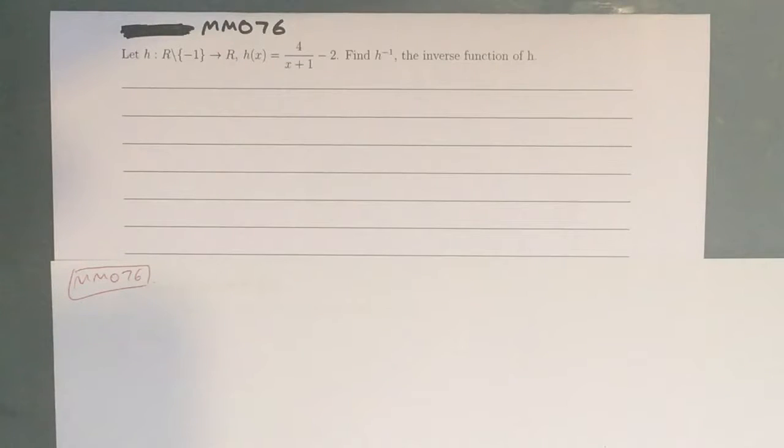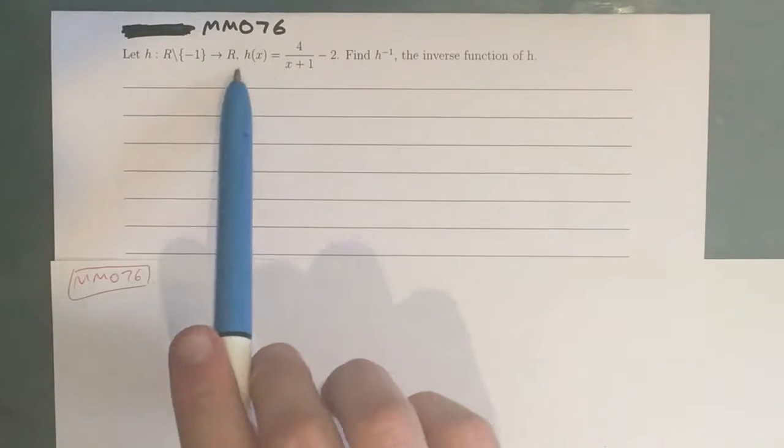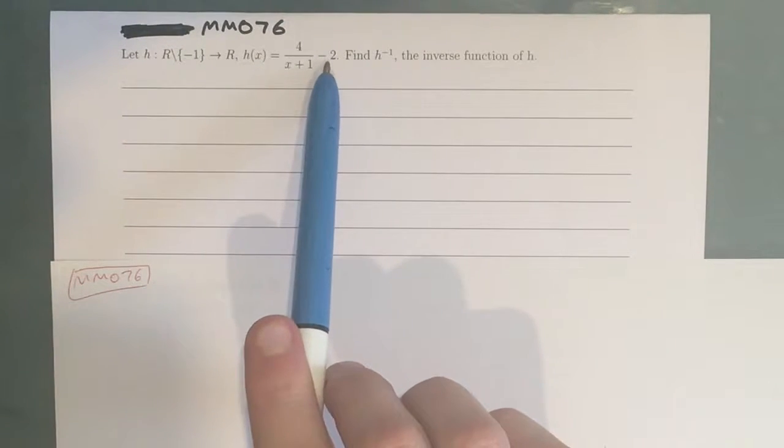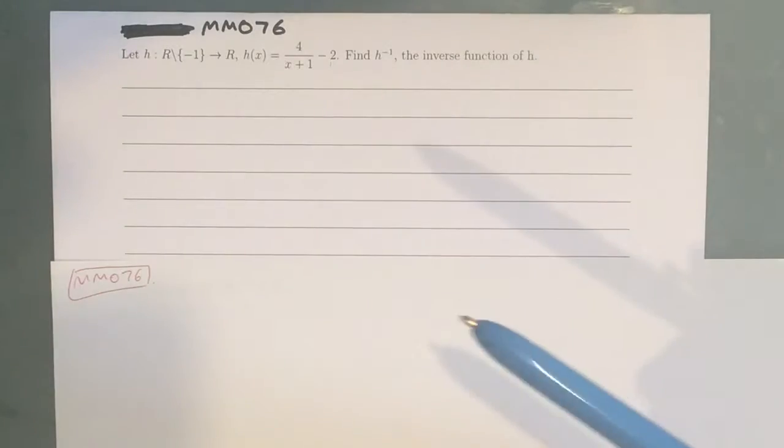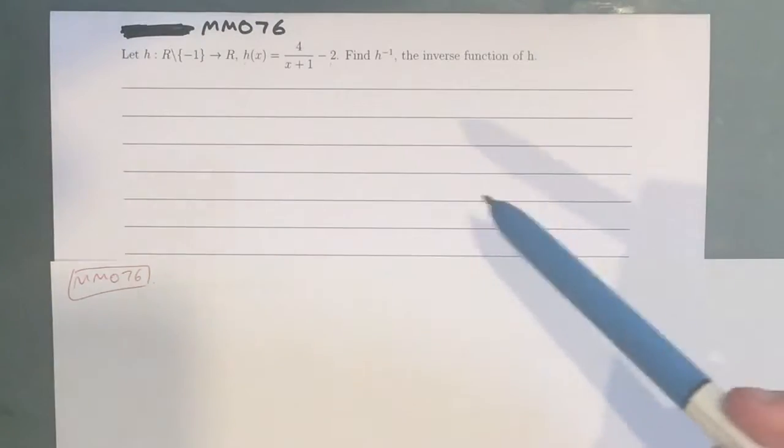Hey guys, this is question MM076 of the Maths Methods Sharpen Study Guide. So we've got a function h of x equals 4 over x plus 1, take 2. And we want to find h of negative 1, the inverse function of h.